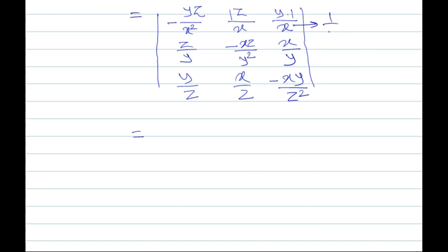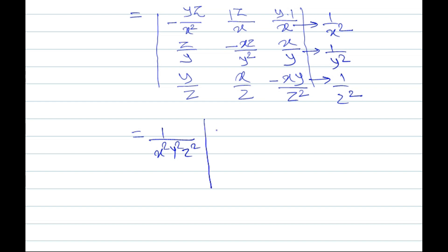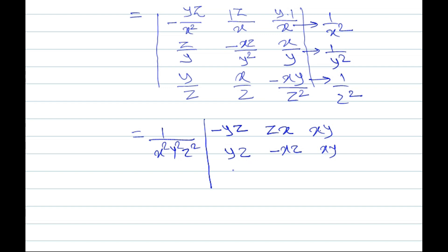Using the property of the determinant, we take common factors from each row. From the first row take 1/x, from the second row take 1/y² — wait, from the second row take 1/y², and from the third row take 1/z² (i.e., taking x², y², z² common respectively). After extracting these, the remaining entries simplify to rows involving y, z; −x, z; x, y and so on.